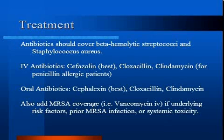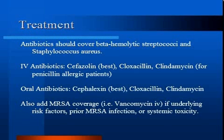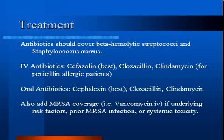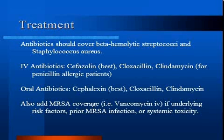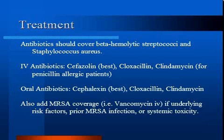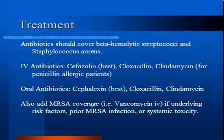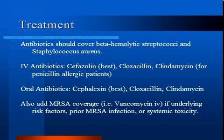Empiric antibiotic therapy for management of cellulitis should include activity against beta-hemolytic strep and Staph aureus. Patients with signs of systemic toxicity or rapidly progressing erythema should be initially treated with IV antibiotics. Some agents that can be considered are cefazolin and cloxacillin. If the patient has risk factors for MRSA infection, vancomycin or one of the newer MRSA antibiotics should be included in the initial treatment regimen until causative microorganisms are identified and their sensitivities are known.